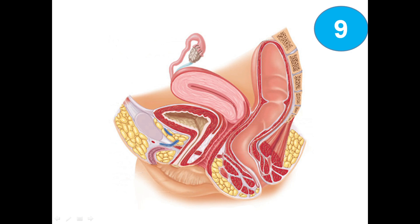The next picture is about the female reproductive system. Starting from the ovary, then the uterine tube, which includes the fimbria, infundibulum, ampulla, and the rest of the uterine tube.